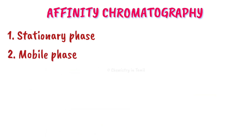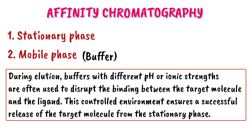Next is the mobile phase. The mobile phase is a buffer. Unlike other chromatography methods that use aqueous and non-aqueous solvents, in affinity chromatography we use a buffer as the mobile phase. We can change the pH to weaken the interaction and separate the target molecule — that is why we use buffers as the mobile phase.